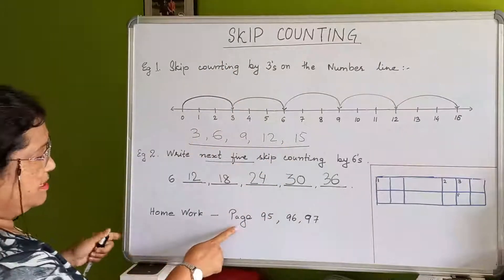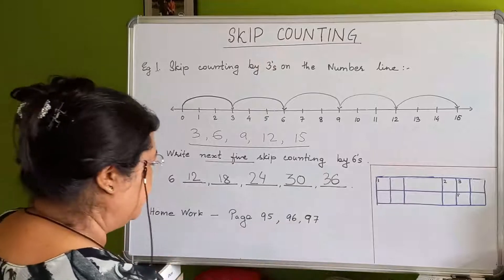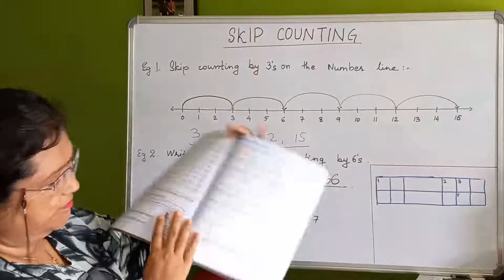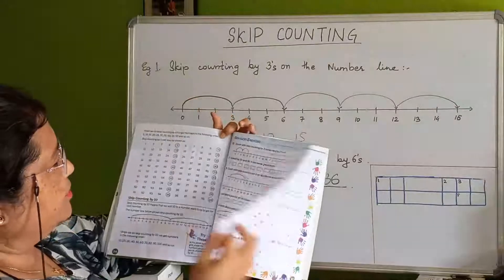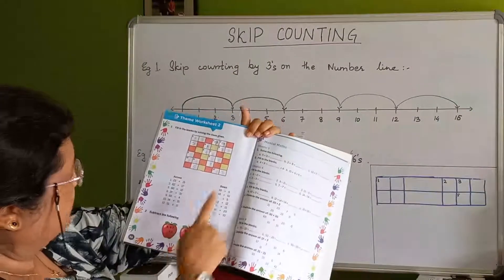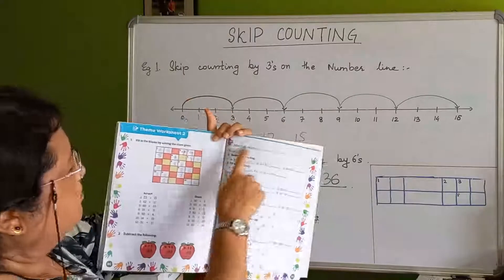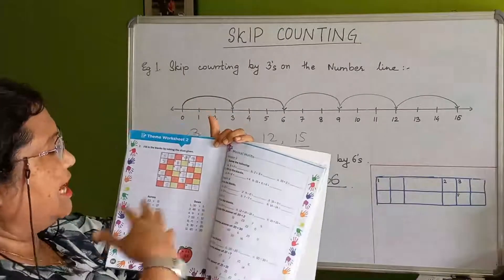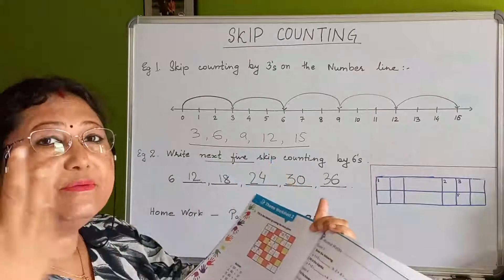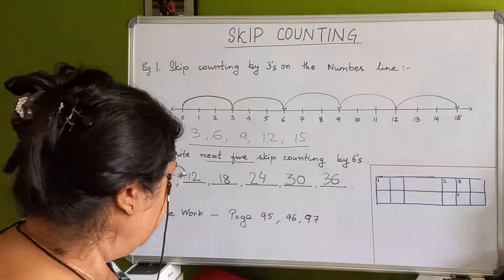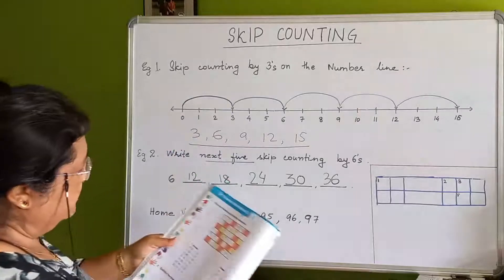For your homework, do page number 95, 96, and 97. Page 95 is skip counting — you can do it on your own. Page 96 I will show you how to do. Page 97 is mental math — addition and subtraction we have done previously, just revision.